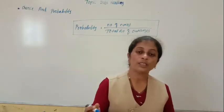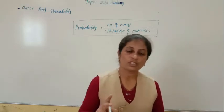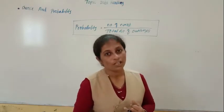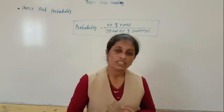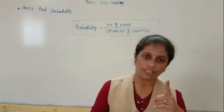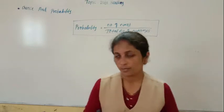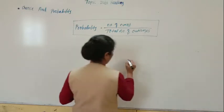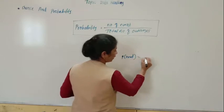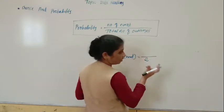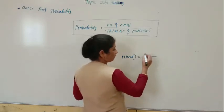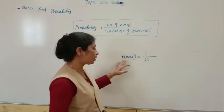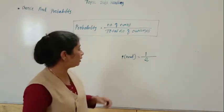For example, if we are tossing a coin and we have to find the probability of getting a head — how many outcomes will there be? Two outcomes: either head or tail. How many times will head occur? Only one time. So the probability of head equals 1 divided by 2, which is 1/2. Similarly, the probability of tail is also 1/2. This is the formula to find probability.